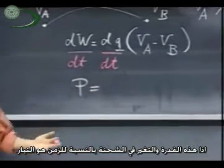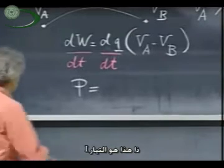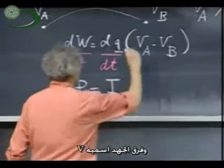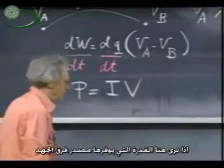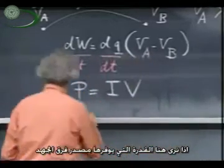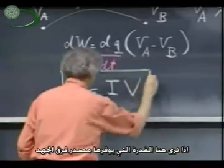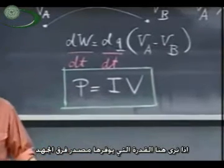DQ dt is current. How many coulombs per second flow? So this is current, I. And the potential difference I simply call, I use that symbol, V.